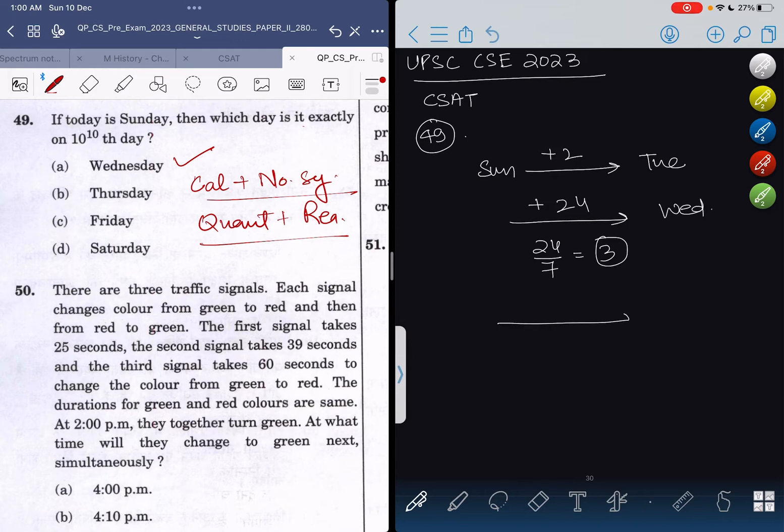In a similar manner, we divide 10^10 by 7, and the remainder here is 4. This becomes a quant question: how to get 4 as the remainder. There are basic rules like cyclicity, or you can simply divide, but that takes a lot of time.